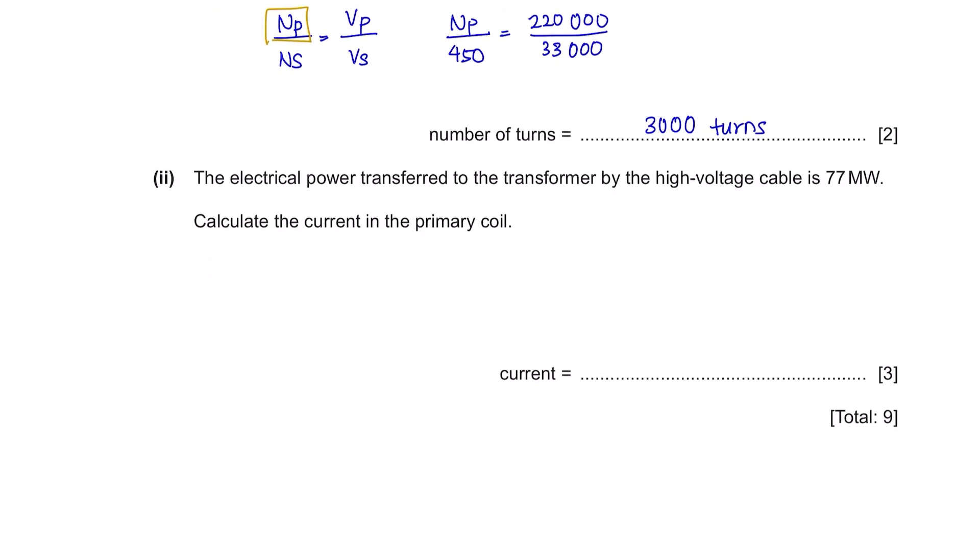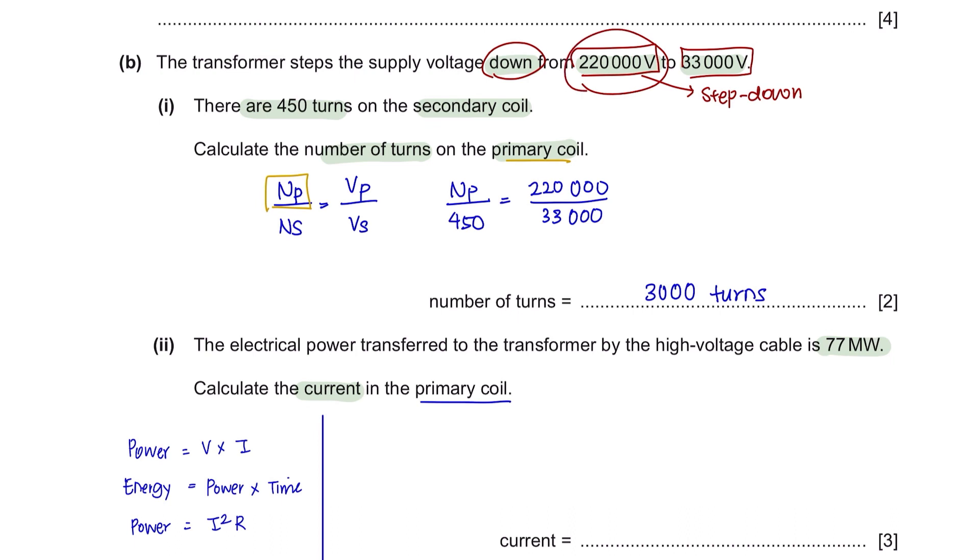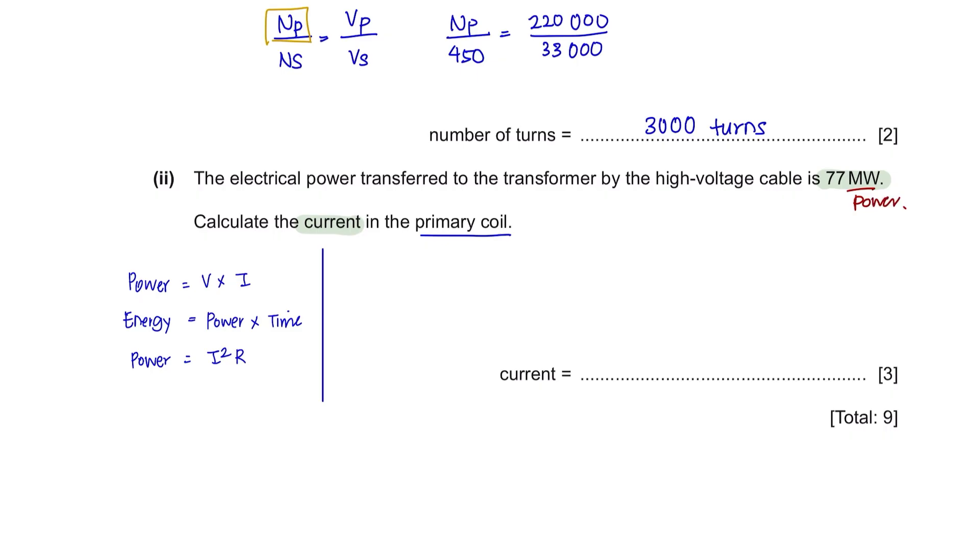Part B. The electrical power transferred to the transformer by the high voltage cable is 77 megawatts. Calculate the current in the primary coil. There are some formulas related to power that you must know. They want you to find the current in the primary coil. You are already given the voltage in the primary coil. So you have the voltage and you have power. This means you can use the formula of power equals voltage times current to find our current. But the power given here is in megawatts and we have to convert it to watts because this is the SI unit. Megawatts is 10 to the power of 6, equals the primary coil voltage which is 220,000 voltage times current. You will get the value of current which is 350 and the unit is amperes. Please do not forget to write your units at the end of your answers.